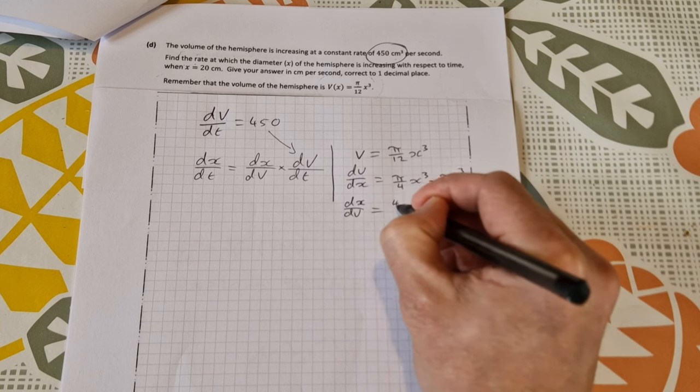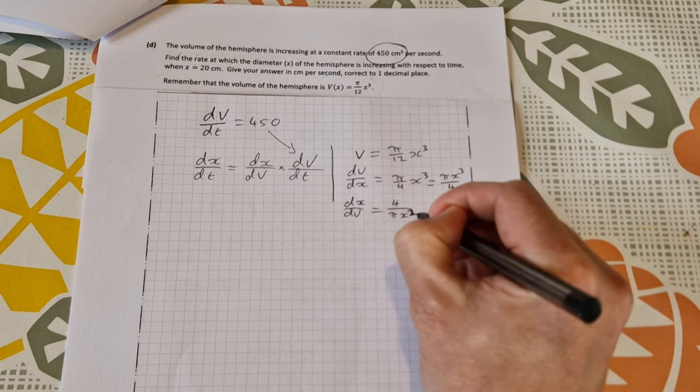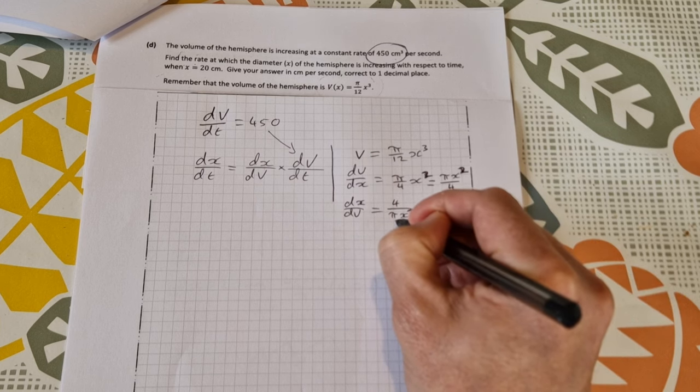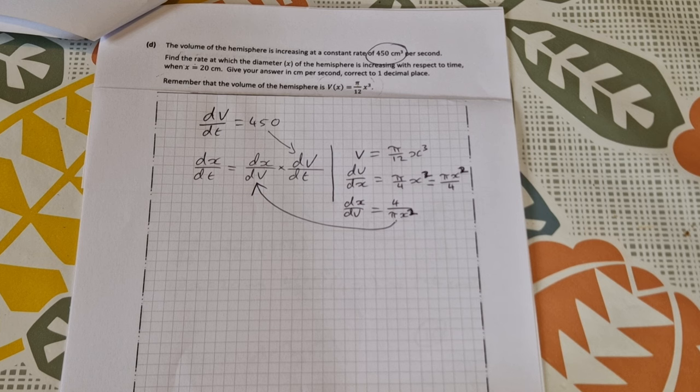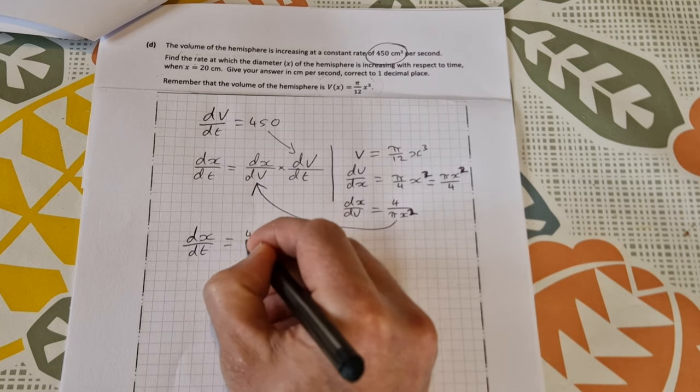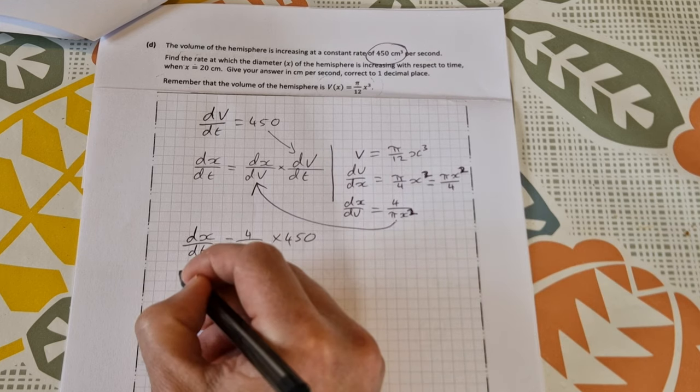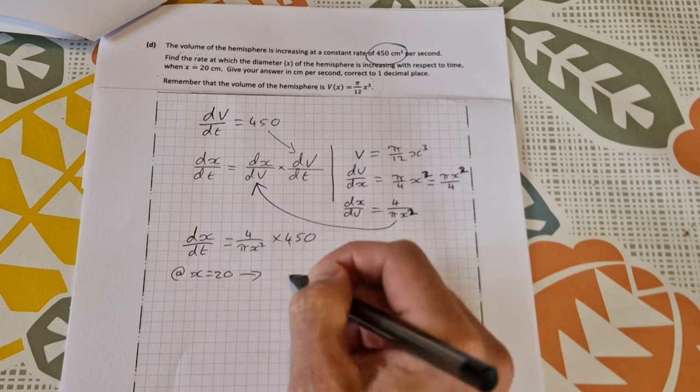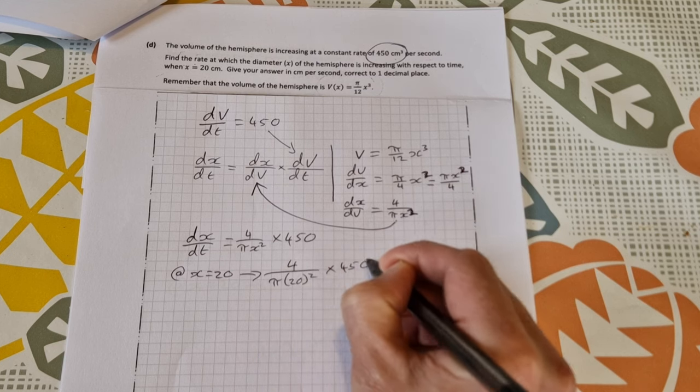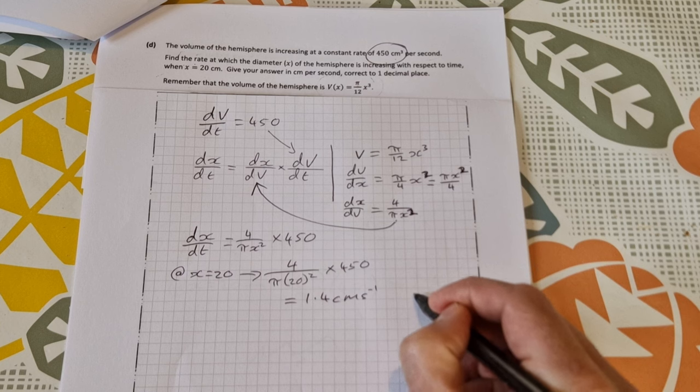So 4 over pi x squared, rather. And it's obviously supposed to be squared when I differentiate that. 10 extra marks if you notice that mistake. So then that's dx dv and that goes in here. So I can find now dx dt. That's equal to dx dv, which is 4 over pi x squared times 450. And then I want that at x equal to 20. So that gives me 4 over pi times 20 squared times 450. And type that into your calculator and you'll get 1.4 centimeters per second. And that's worth 10 marks.